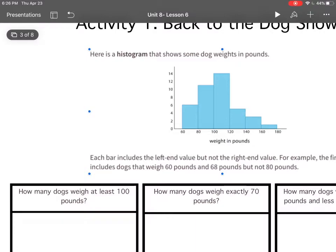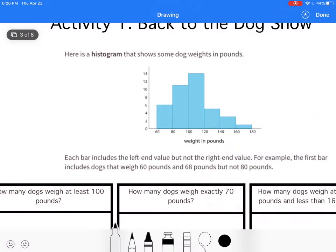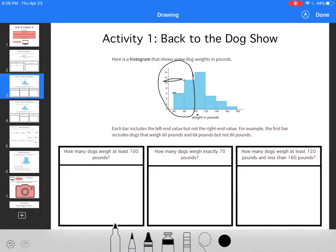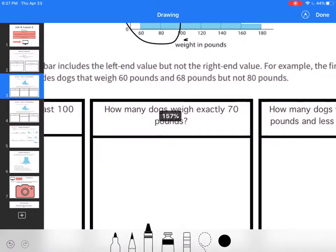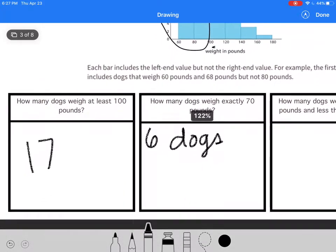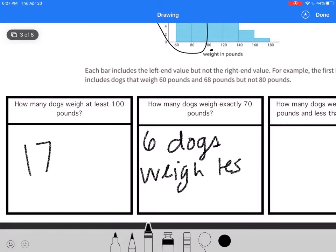How many dogs weigh at least 100 pounds? I need to use the first two bars of information. I don't use the third one because it says that you don't use the right-end value and 100 would be to the right. This is 6 and this is 11, so 6 plus 11 is 17. How many dogs weigh exactly 70 pounds? Well I'm not sure because it's a histogram. I know that 6 dogs weigh less than 80 pounds, but I don't know how many weigh exactly 70 pounds.